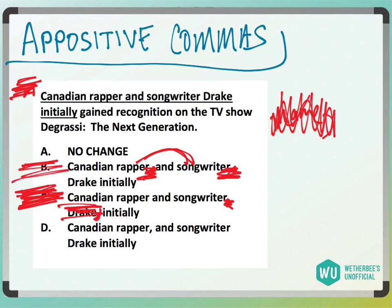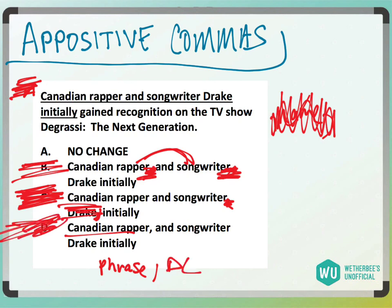Answer choice D: 'Canadian rapper, comma, and songwriter Drake initially gained recognition.' With that comma, the left side would be 'Canadian rapper' and the right side would be 'and songwriter Drake initially gained recognition on the TV show Degrassi,' which means you would have just a phrase here and then a dependent clause here. You'd never have an independent clause. Answer choice D is gone.